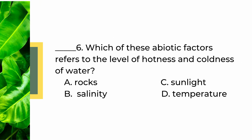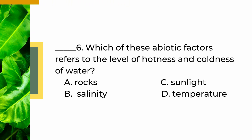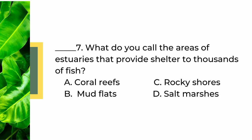Number 6: which of these abiotic factors refers to the level of hotness and coldness of water? A. Rocks, B. Salinity, C. Sunlight, D. Temperature. Number 7: what do you call the areas of estuaries that provide shelter to thousands of fish? A. Coral reefs, B. Mudflats, C. Rocky shores, D. Salt marshes.